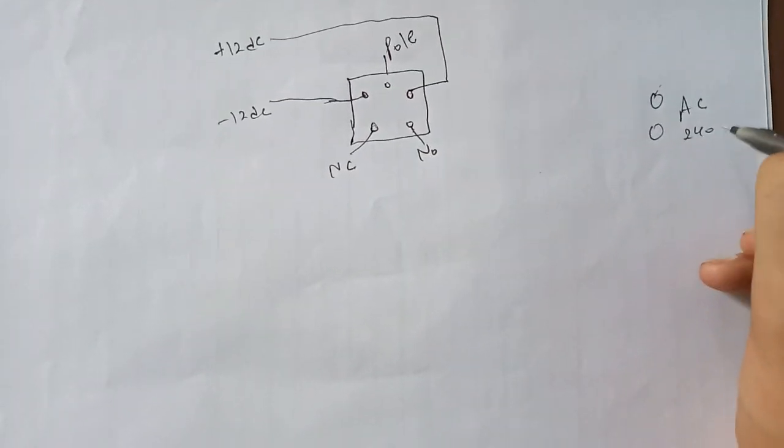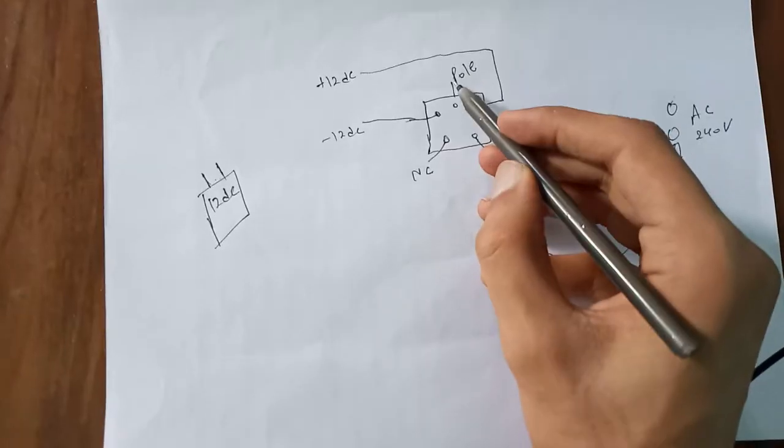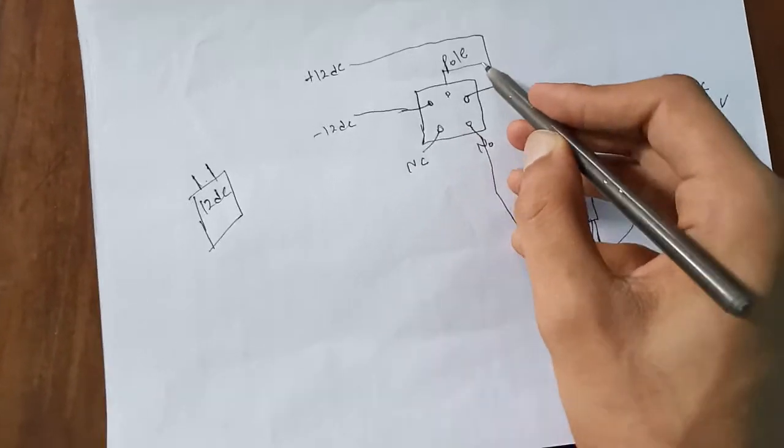This is AC connection 24 volt DC. The pole pin of relay will also be connected to AC connection directly.